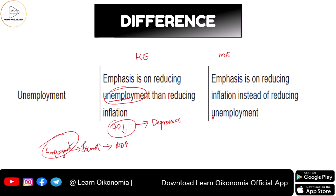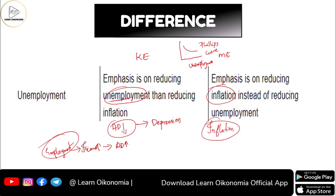Regarding monetarism, monetarist economists always attached importance to controlling inflation — that was the top priority of the central bank. There is a well-known trade-off between inflation and unemployment, described by the Phillips curve, which plots unemployment on one axis and inflation on the other. This trade-off means that in order to reduce inflation, you may have to suffer more unemployment, and to reduce unemployment, you may experience more inflation. Keynesian economics and monetarist economics were thus addressing different sides of the same point.